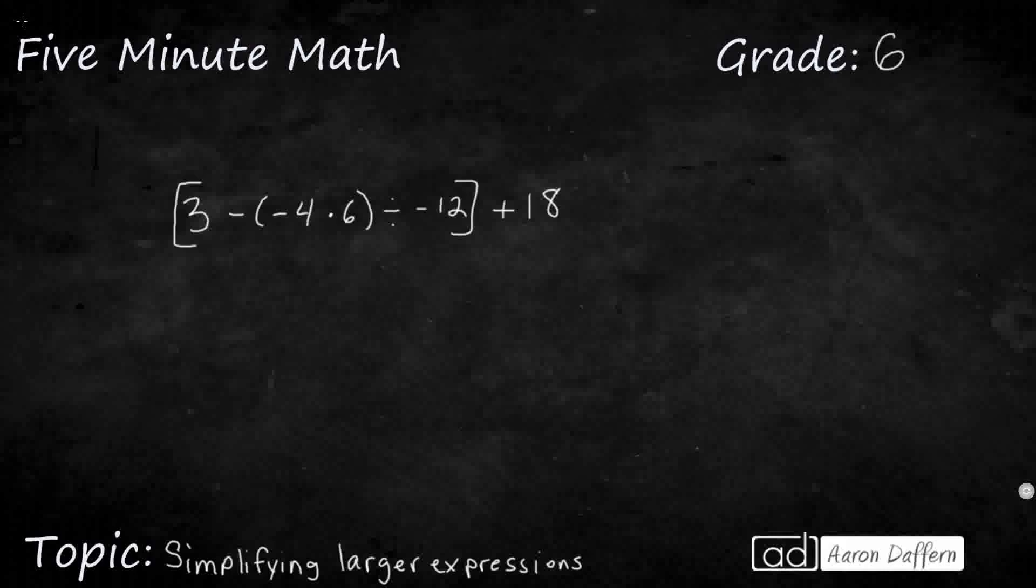So we see an expression here on the screen, and we should immediately be thinking order of operations. Before we start thinking about what happens when you multiply by a negative or subtract a negative, we need to be thinking about our order of operations. Please excuse my dear Aunt Sally, right? So that's going to mean we're going to deal with our parentheses first, and we actually have two sets of parentheses. We have this parentheses right here, and then this larger bracket, which acts as an outer set of parentheses. We're going to have to deal with those first.